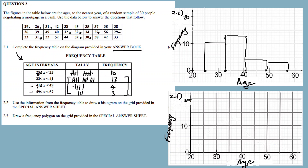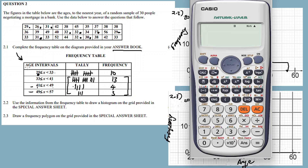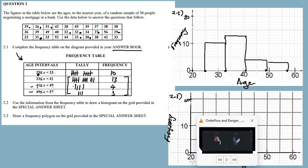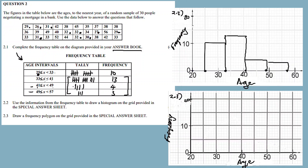Now we plot a frequency polygon. To plot the polygon, you need the midpoints for the intervals. So for the first interval: 25 plus 33 equals 58, divided by 2 gives you 29. So you plot a point at 29 on the x-axis at frequency 10.